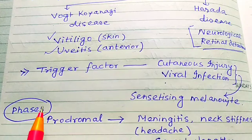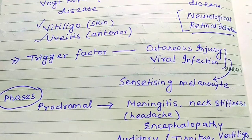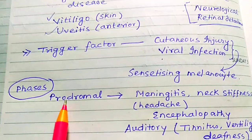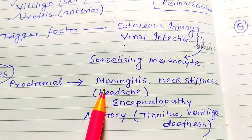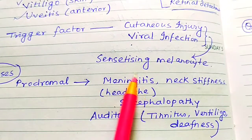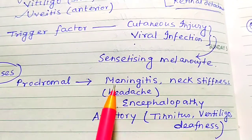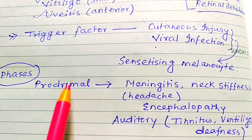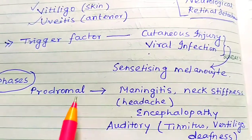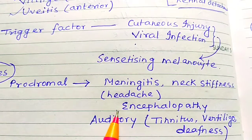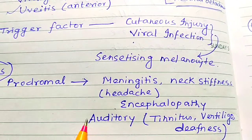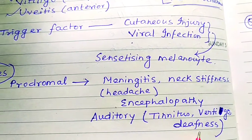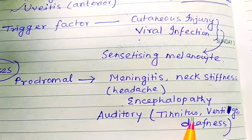The first phase is the prodromal phase — before the acute phase sets up. In the prodromal phase you get meningitis, neck stiffness, headache, encephalopathy, and auditory symptoms including tinnitus, vertigo, and stiffness.